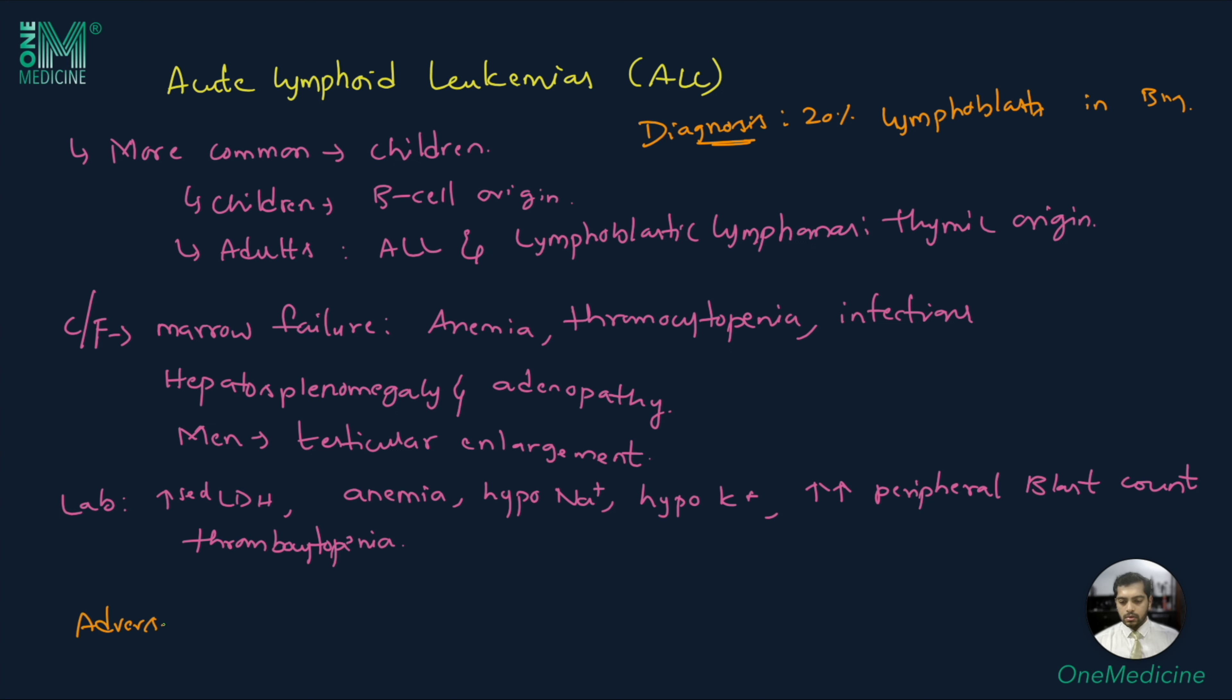Adverse or poor prognosis is seen in patients with age more than 35 years, very high total leukocyte count or lymphocyte count on presentation, presence of translocation between 9 and 22nd chromosome, presence of translocation between 1 and 19th chromosome, and translocation of 4 and 11th chromosome also confer a poorer prognosis.